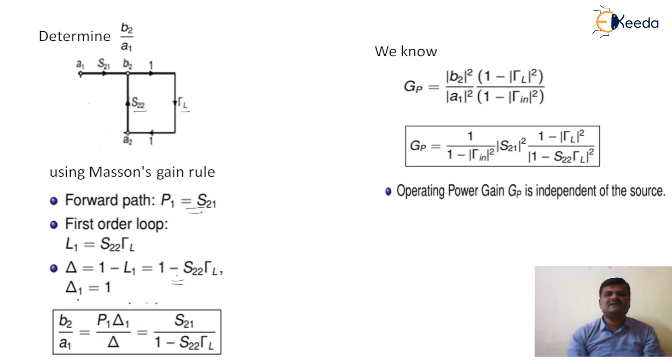Then same as delta 1 equal to 1. Put all these values in the equation of b2 by a1 equal to P1 delta 1 divided by delta equal to S21 multiplied by 1 divided by 1 minus S22 gamma L. So this is the value of b2 by a1.